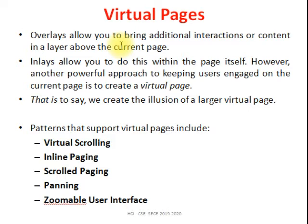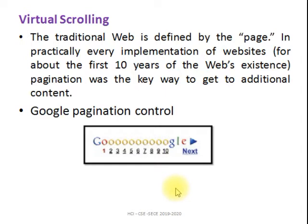Now we look at virtual pages. In an inlay, some part of the page is hidden; when you click a menu or link, that part of the page is revealed. This is part of the concept of virtual pages — initially the virtual page is completely hidden from the user. When a user clicks a menu or wants more details, the page expands. Virtual page types include virtual scrolling, inline paging, scrolled pages, panning, and zoomable user interfaces.